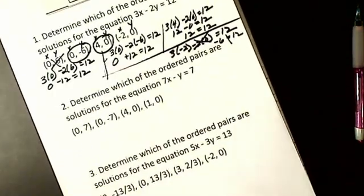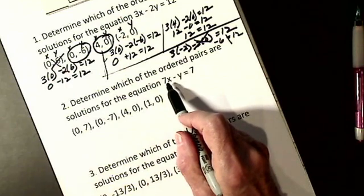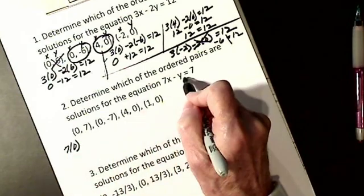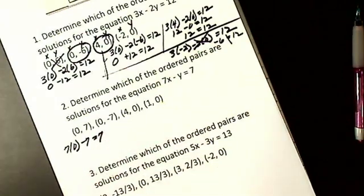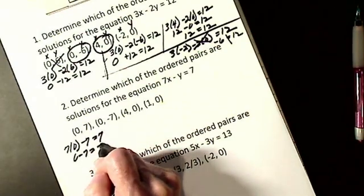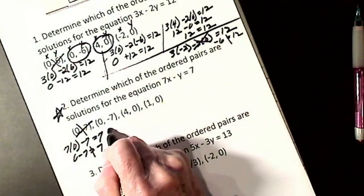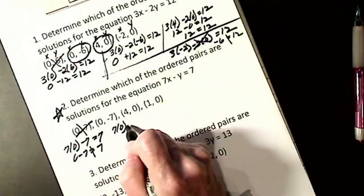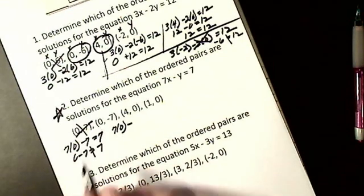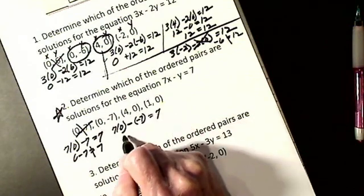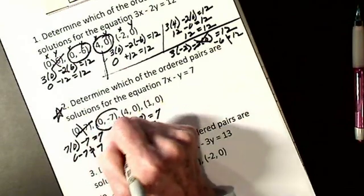We'll do two more — determine which of the ordered pairs are solutions for this equation. If x is 0: 7 times 0 minus 7 equals 7. Zero times anything is 0, so that's not true. The next one — people get this wrong because of a sign mistake. I have 7 times 0, and this minus is part of the problem, then I substitute for y: negative 7 equals 7. So I get 0 plus 7 equals 7, which is true.